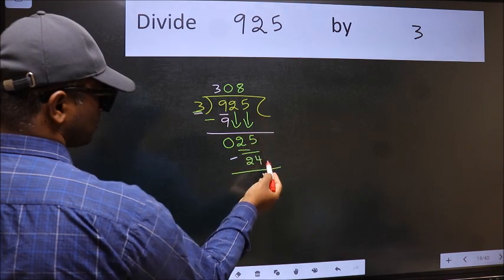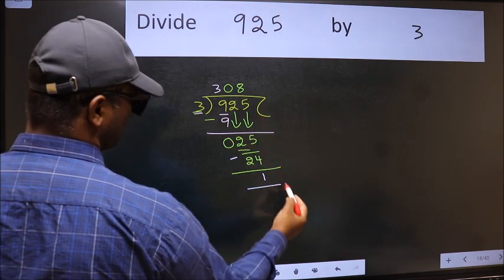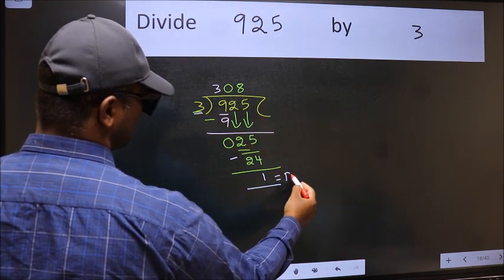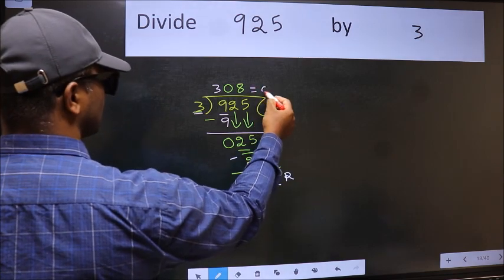No more numbers to bring it down. So we stop here. This is our remainder and this is our quotient.